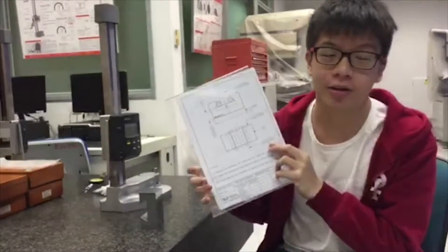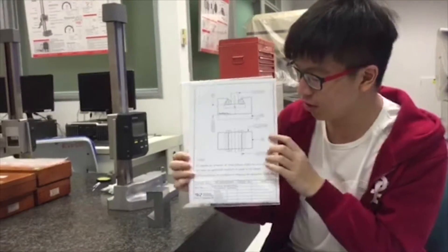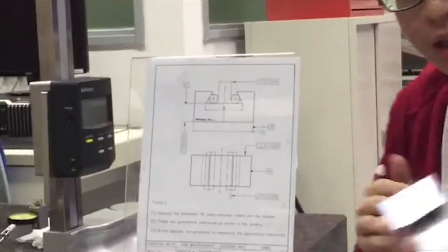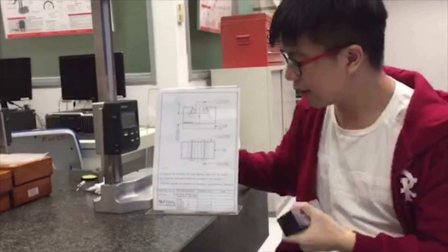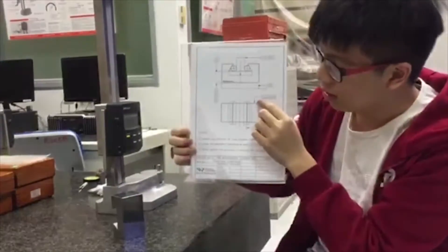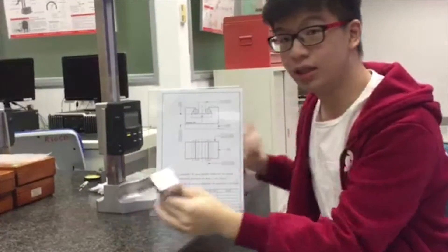We are measuring perpendicularity in reference to datum B. Datum B is actually the surface of your workpiece, and we are taking measurement from this surface, which is equivalent to this surface.